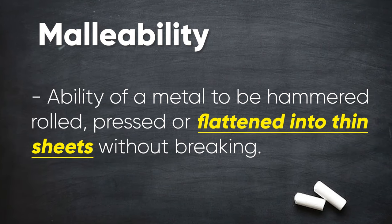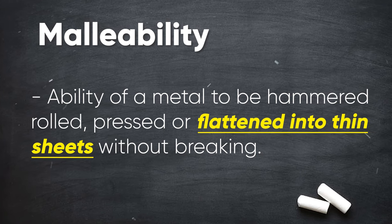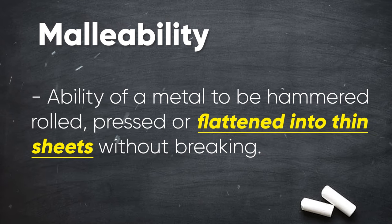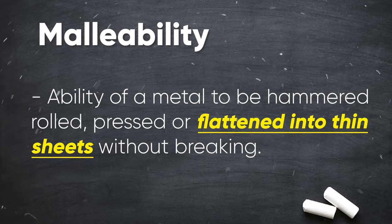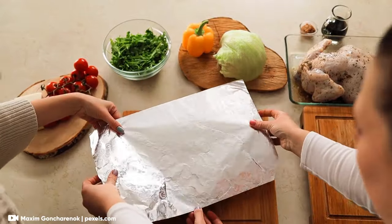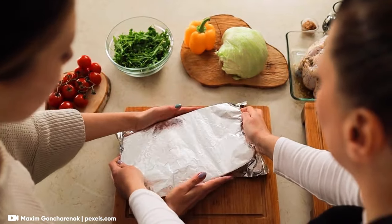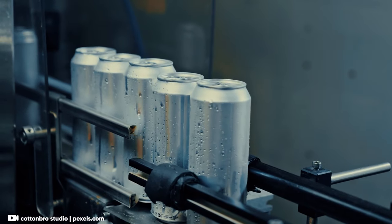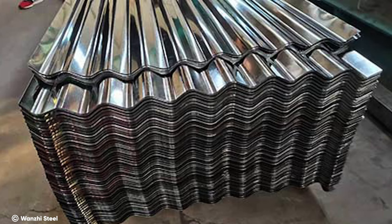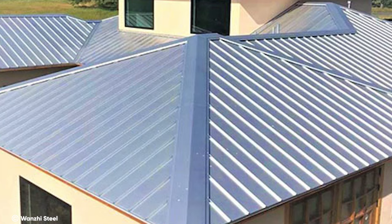Malleability is another property related to metals. This is the material's ability to be hammered, rolled, pressed, or flattened into thin sheets without breaking. Metals like aluminum are highly malleable, which is why they are used for making aluminum foil. Other examples are tin used for making cans and galvanized sheets of iron used for the protective roofing of our houses.